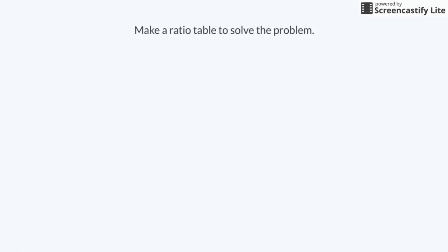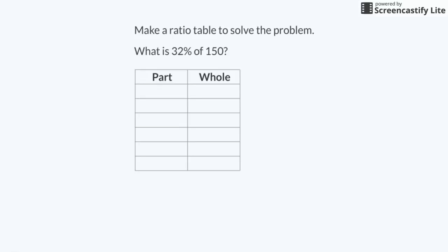Make a ratio table to solve the problem. What is 32% of 150? I am going to make a ratio table. I can use this to organize parts and wholes. The table is set up with two columns and seven rows. The first column is labeled part and the second column is labeled whole.